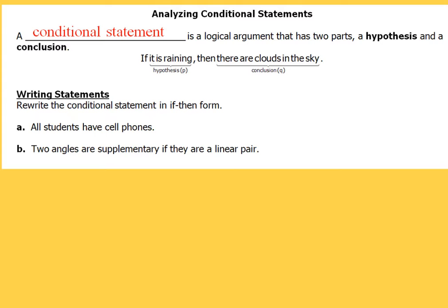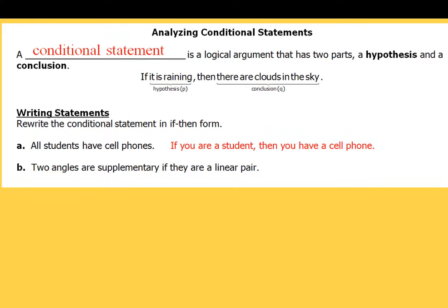Let's take a look at how to rewrite a conditional statement in if-then form. For our first example A, it says 'all students have cell phones.' By saying 'if you're a student, then you have a cell phone,' that's going to be the correct way to rewrite that in if-then form.